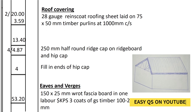We shall go to the roof covering. The easiest way to get the area of the roof covering is to take the length of the purlin times the length of the rafter, then multiply by two sides. The length of the purlin is 20 meters, the length of the rafter is 3.59, so 2 times 20 times 3.59. Gate range coat roofing sheet laid on 75 times 50 millimeters timber purlin at one meter center to center.